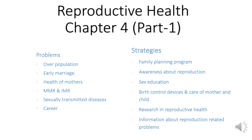Next is birth control devices and care of mother and child. Fertile couples and people of marriageable age should know about available birth control devices, care of pregnant mothers, postnatal care of the mother and child, and the importance of breastfeeding, with equal importance given to the male and female child. Next, medical facilities mean better awareness about sex-related problems, prenatal care of the mother, medically-assisted deliveries, and postnatal care of mother and infant to decrease maternal and infant mortality.